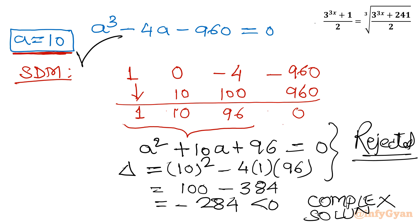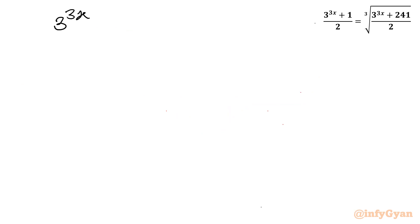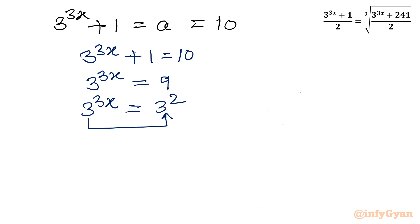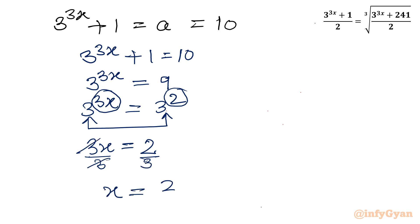The only accepted solution is a = 10. Recalling that a = 3^(3x) + 1, we write 3^(3x) + 1 = 10, so 3^(3x) = 9 = 3^2. Since the bases are equal, the exponents must be equal: 3x = 2, and dividing both sides by 3 gives x = 2/3.